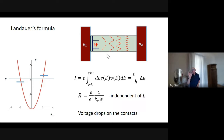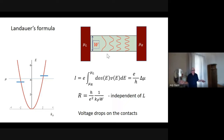This gives the resistance as h over e squared divided by the number of channels, and the number of channels is k_F times w — the Fermi momentum times the width. So we get a resistance that's non-zero but independent of the system's size. By this theory, the voltage drops at the contacts. It's a very deep quantum mechanical analysis, but you could almost expect it from common sense.